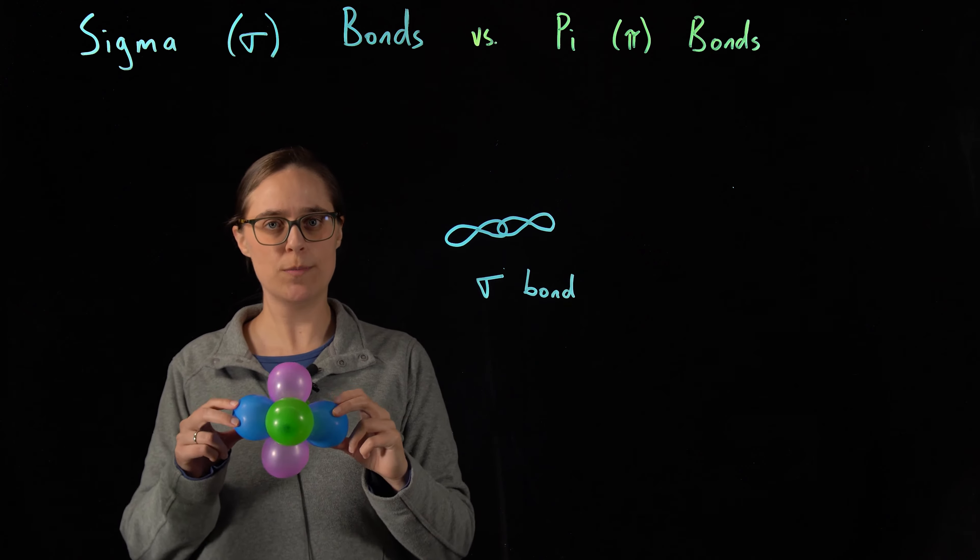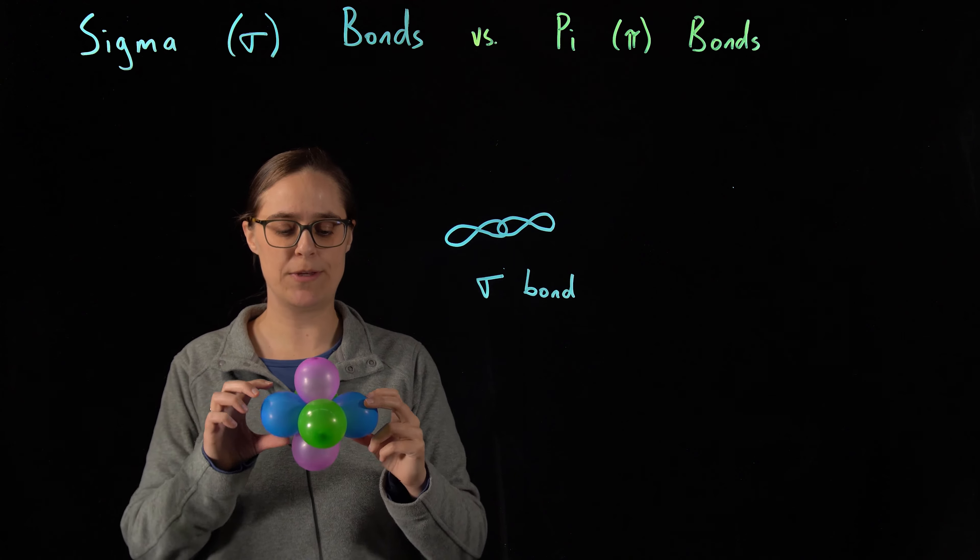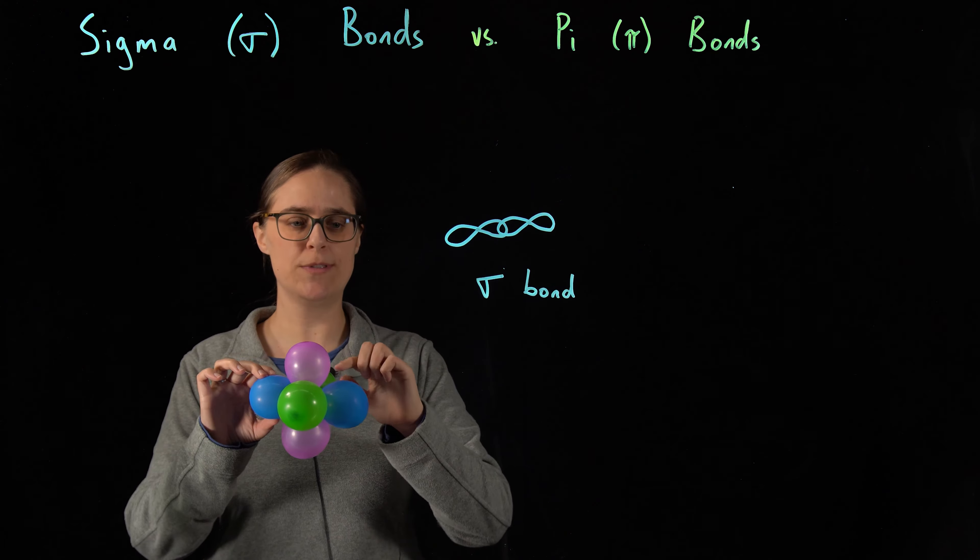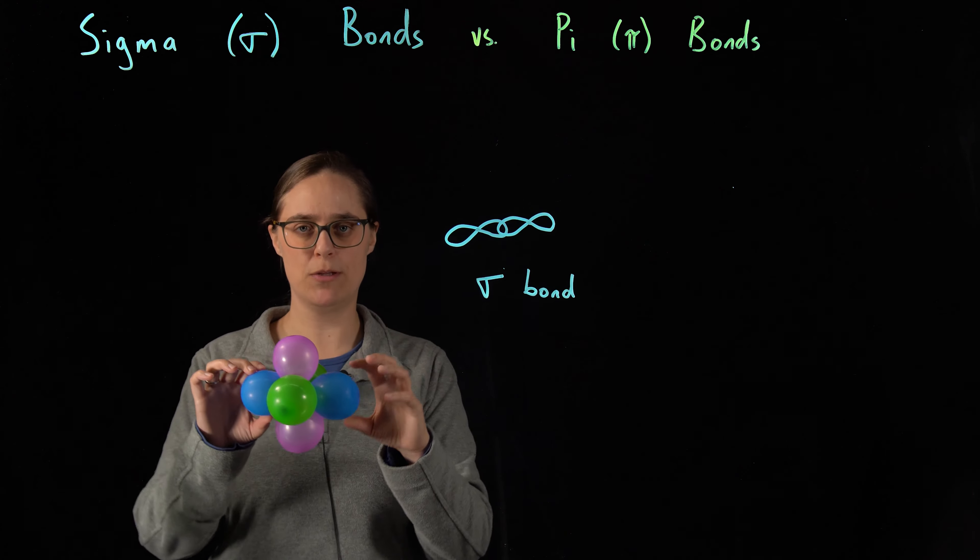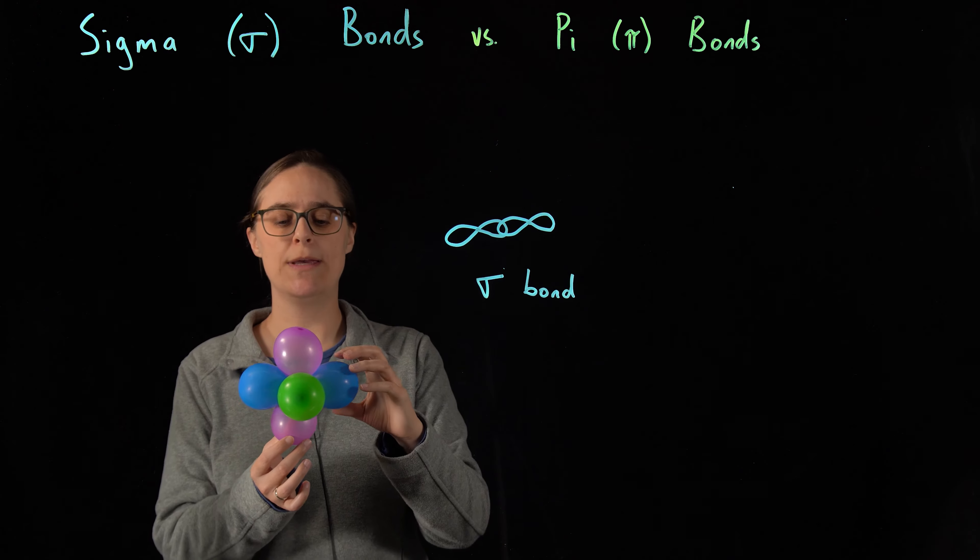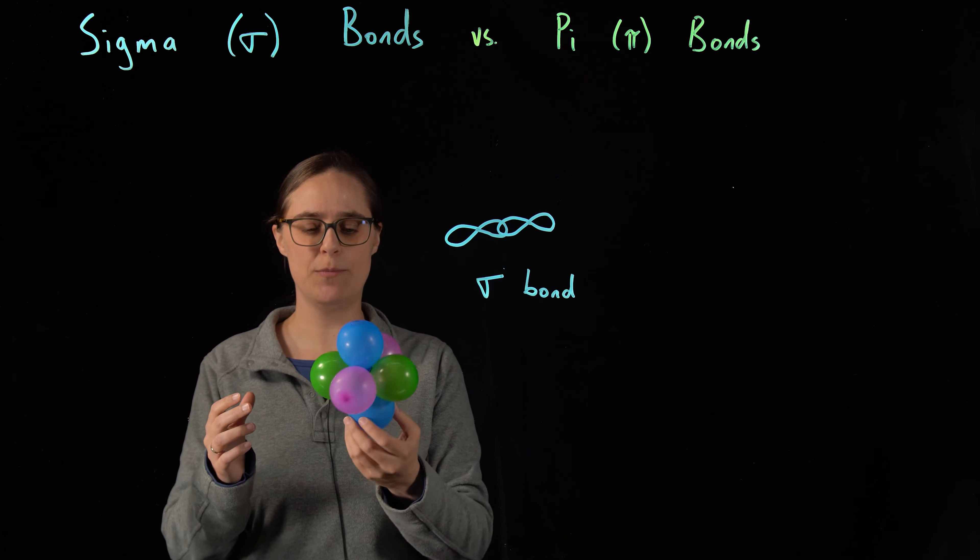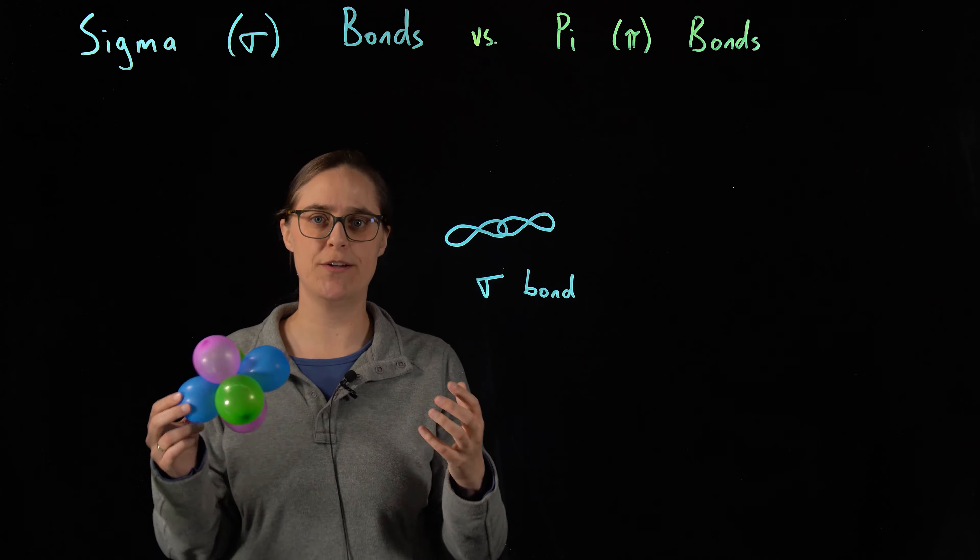Now, different orbitals on the same atom repulse each other. They don't like overlapping. So these two blue balloons, these would be one dumbbell-shaped orbital. You can see that I have a green orbital and a purple orbital, and they are all pointing in different directions. In this particular example, they happen to be 90 degrees from each other.